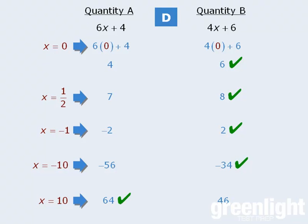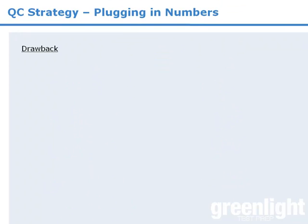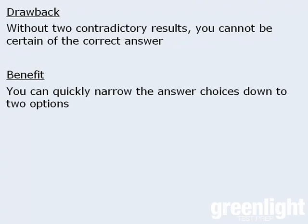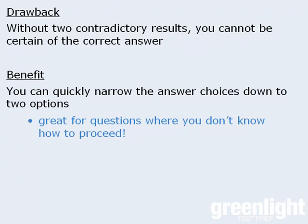So when it comes to plugging in numbers for the variables, the drawback is – if the strategy does not yield two contradictory results, then you can never be 100% certain of the correct answer. On the other hand, this strategy allows you to quickly narrow the answer choices down to two options by plugging in only one value. As such, this strategy provides you with a great approach to handling questions when you don't know how to proceed.